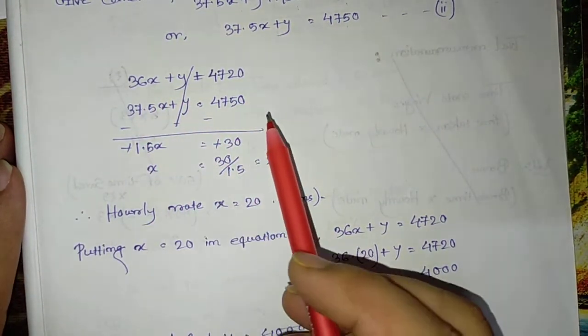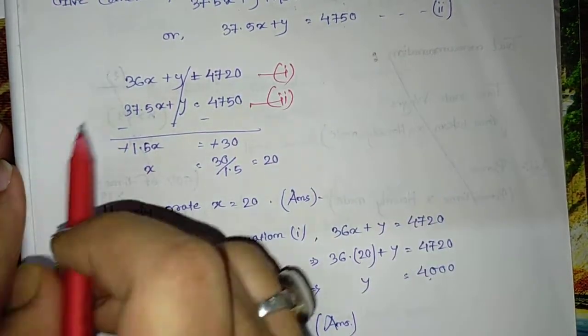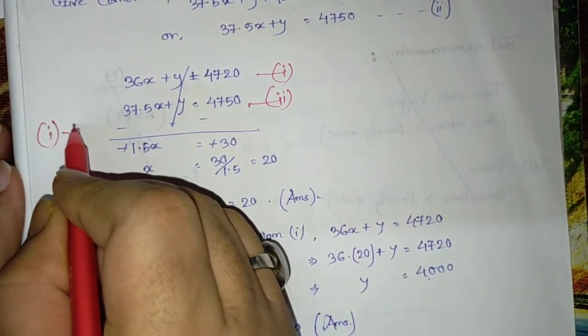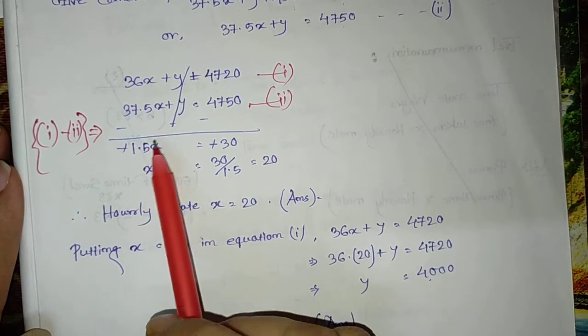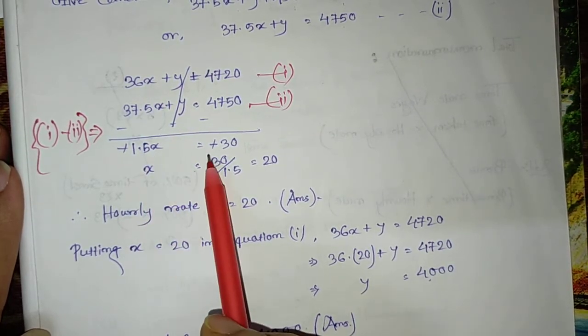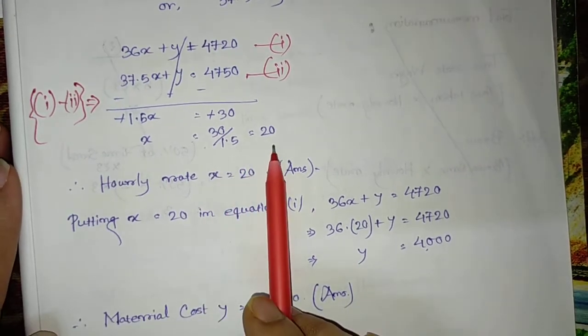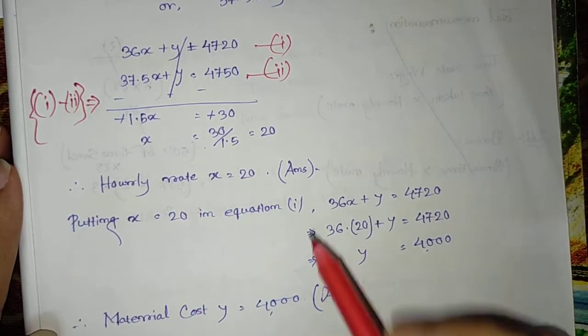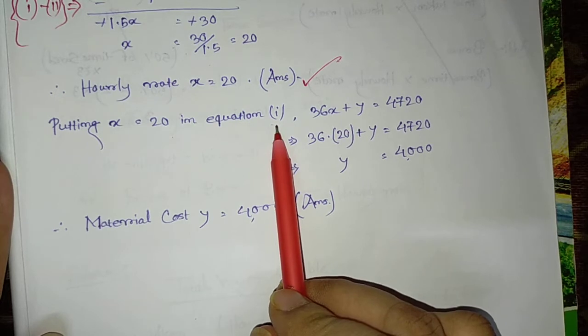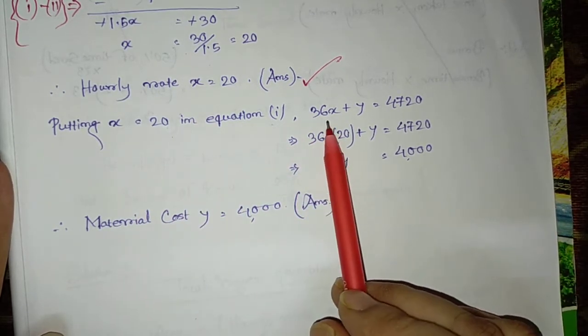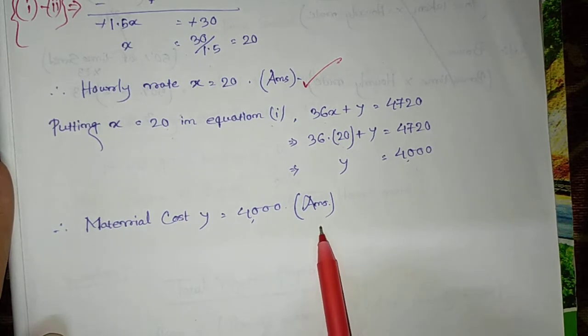Solve both equations. Simply deduct equation 1 from equation 2. Deducting equation 1 from equation 2, we get: subtracting with minus sign, we get minus 1.5x equals to minus 30. Minus minus cancels. x equals to 30 by 1.5, which is 20. Therefore, x is the hourly rate. Hourly rate is 20 rupees. Now, x equals to 20. Put x equals to 20 in equation 1. You will get, putting 20 in place of x, you will get the value of y, that was material cost.